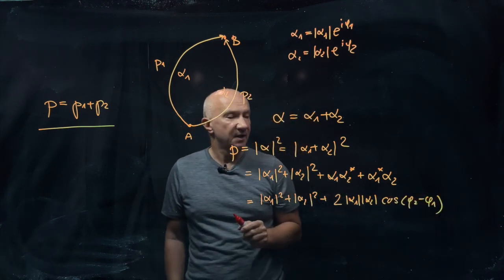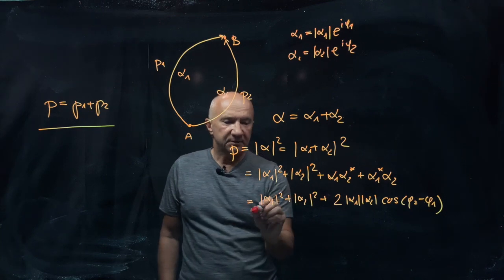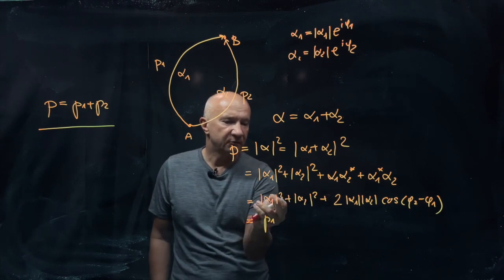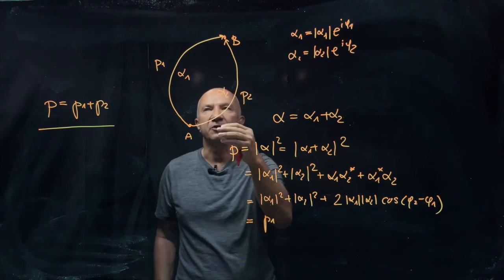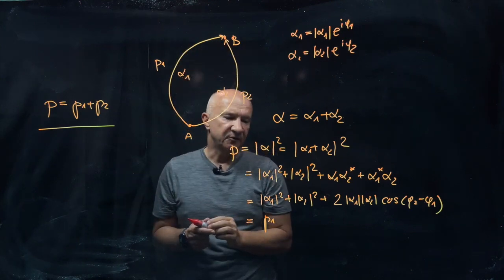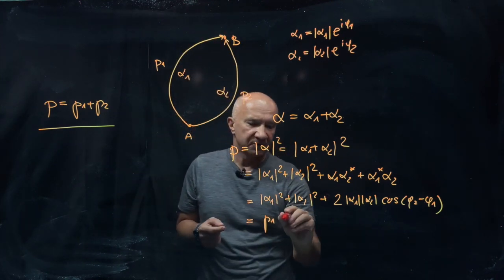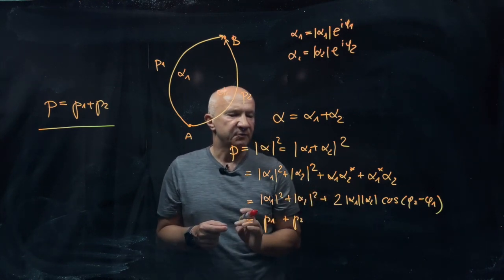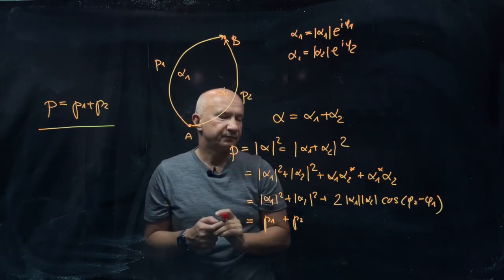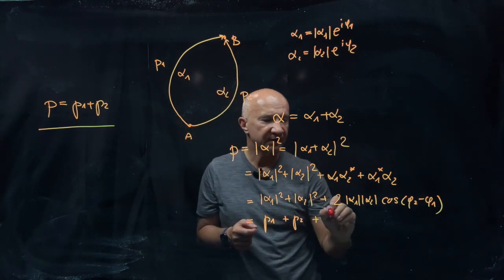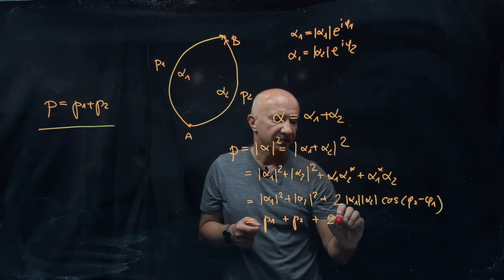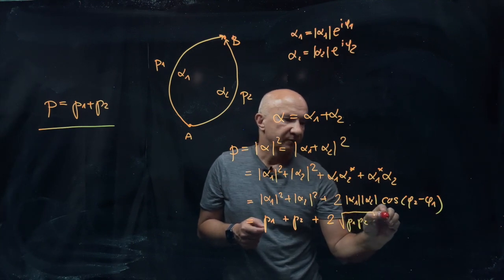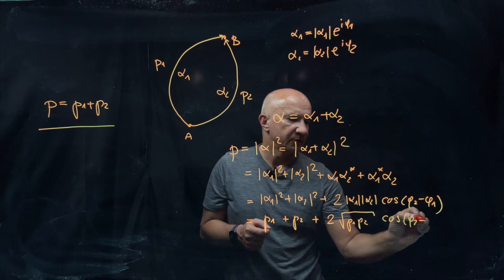Looking at this expression, |alpha1|² is the probability that the system follows the first path — that's p1 — and |alpha2|² corresponds to the probability the system follows the second path — that's p2. The remaining term can be written as 2√(p1·p2)·cos(φ2 minus φ1).